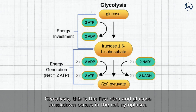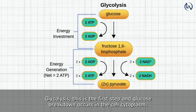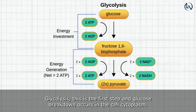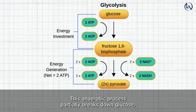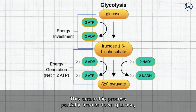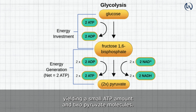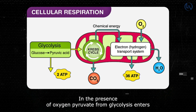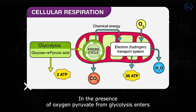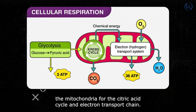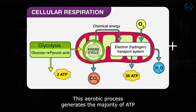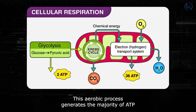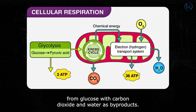Glycolysis, the first step in glucose breakdown, occurs in the cell's cytoplasm. This anaerobic process partially breaks down glucose, yielding a small amount of ATP and two pyruvate molecules. In the presence of oxygen, pyruvate from glycolysis enters the mitochondria for the citric acid cycle and electron transport chain. This aerobic process generates the majority of ATP from glucose, with carbon dioxide and water as by-products.